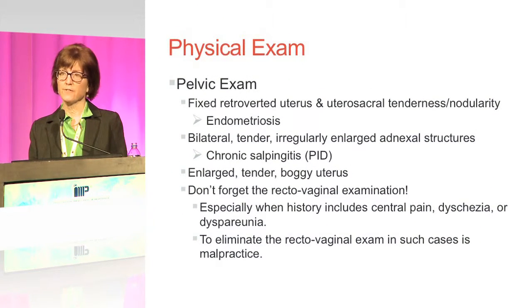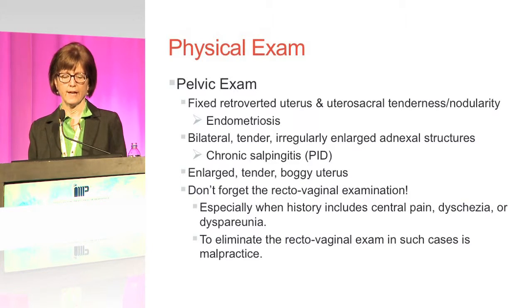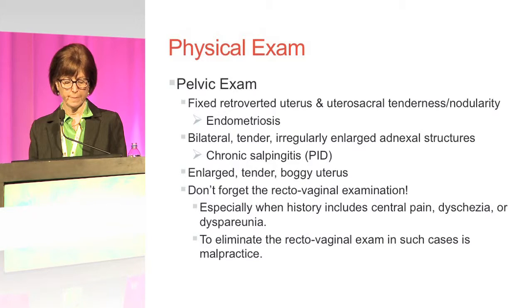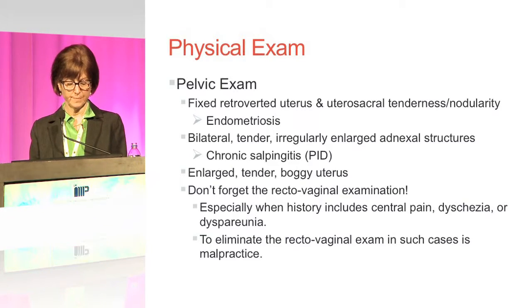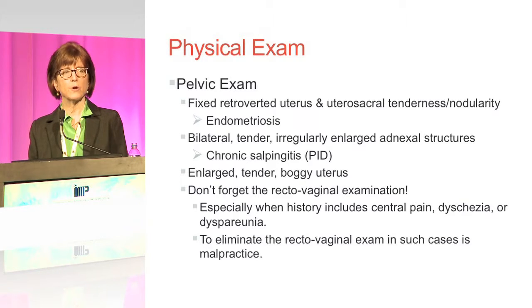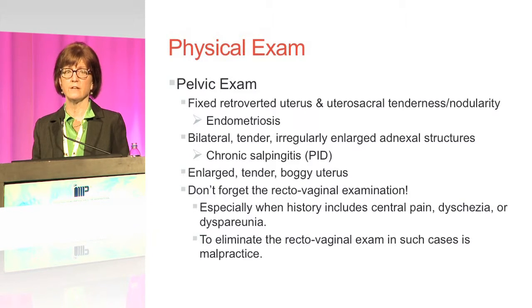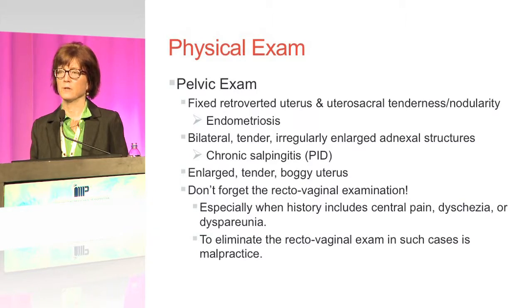When you do the exam, note if the uterus is retroverted, and note if there are different areas of tenderness along the adnexa, pointing more to a diagnosis of endometriosis. If the adnexa feels boggy, you can think of chronic salpingitis associated with chronic PID. Don't forget to do the rectovaginal exam, especially if the patient is complaining of dyspareunia or dyschezia. Not doing the rectovaginal exam leads to not doing a full exam and can mean you've done a disservice to the young woman.